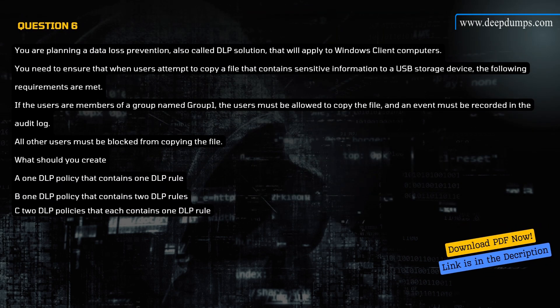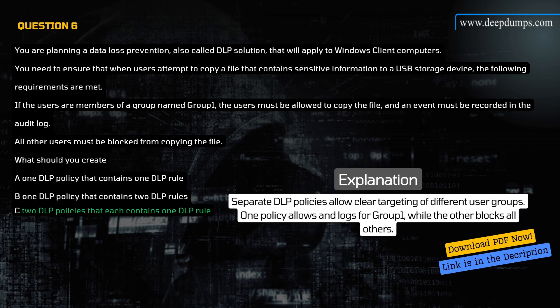Question 6. You are planning a data loss prevention (DLP) solution that will apply to Windows client computers. You need to ensure that when users attempt to copy a file containing sensitive information to a USB storage device: if the users are members of Group 1, they must be allowed to copy the file and an event must be recorded in the audit log; all other users must be blocked from copying the file. What should you create? A) 1 DLP policy with 1 rule, B) 1 DLP policy with 2 rules, C) 2 DLP policies each containing 1 rule. Correct answer is C. Explanation: Separate DLP policies allow clear targeting of different user groups — one policy allows and logs for Group 1, while the other blocks all others.